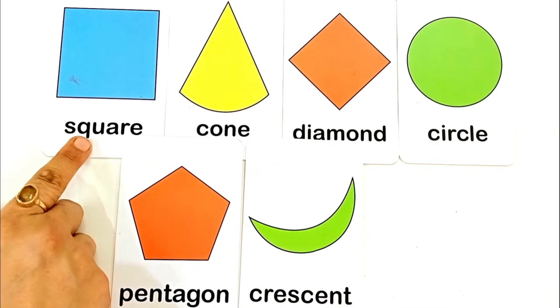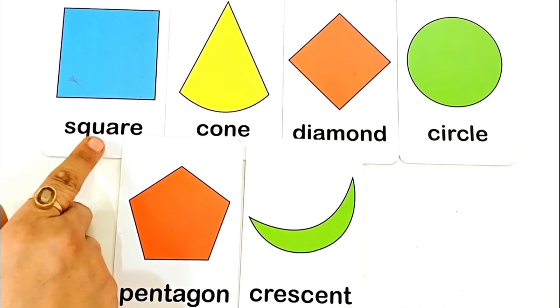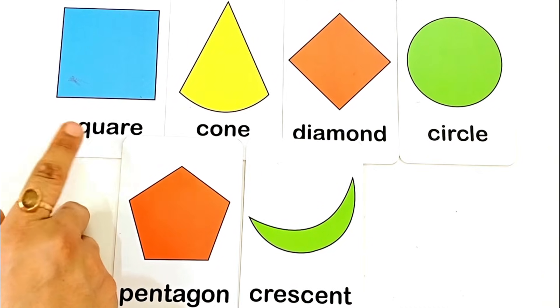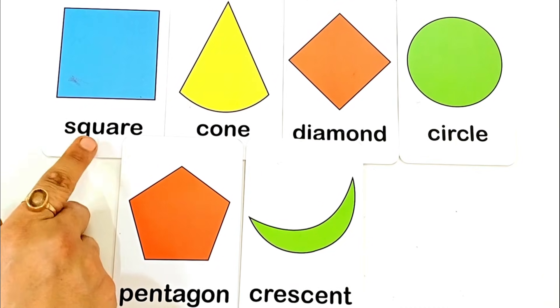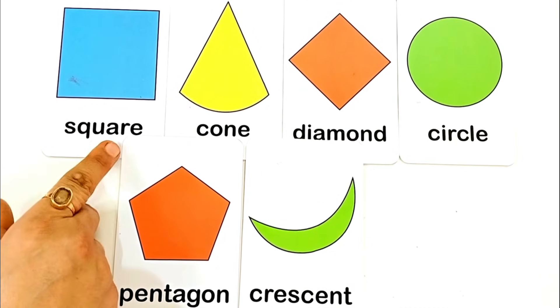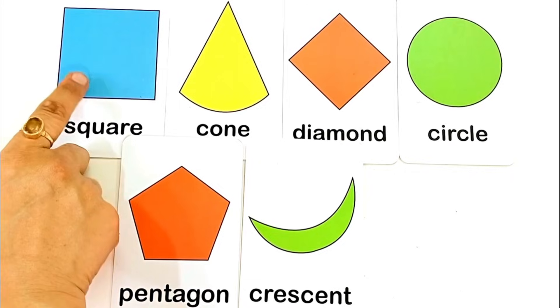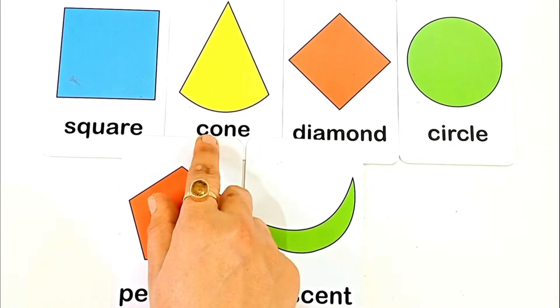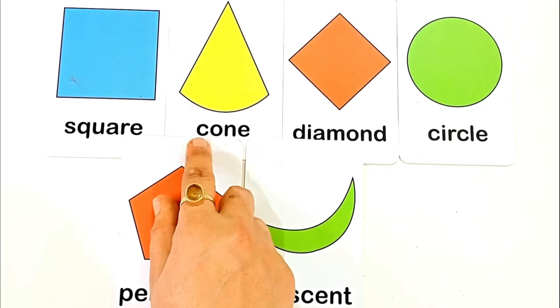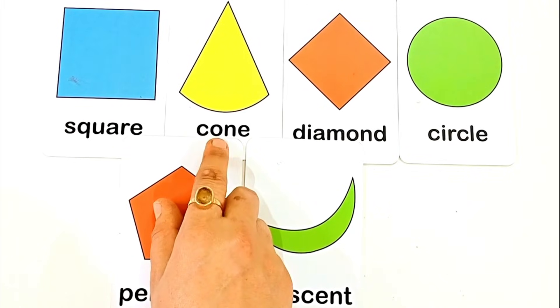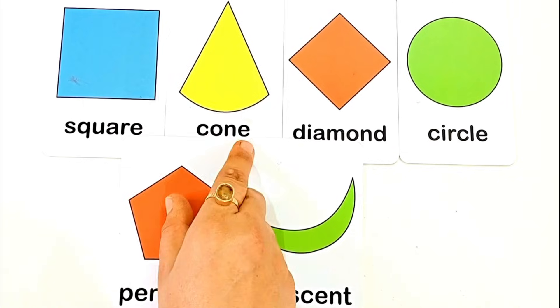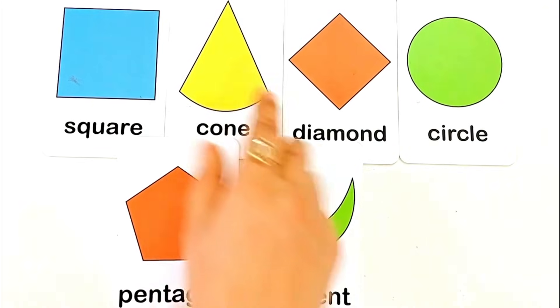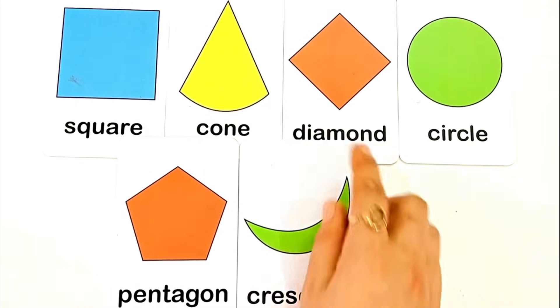S for square. This is square shape. C for cone. C O N E, cone. This is cone shape.